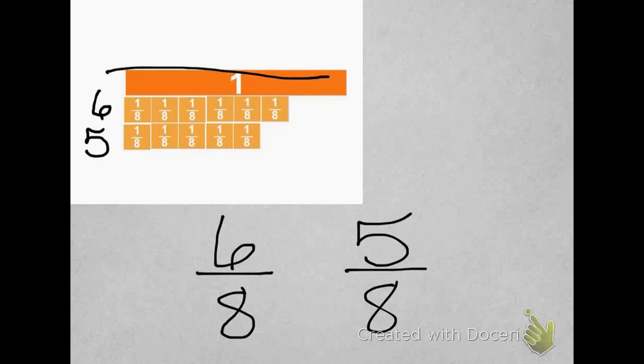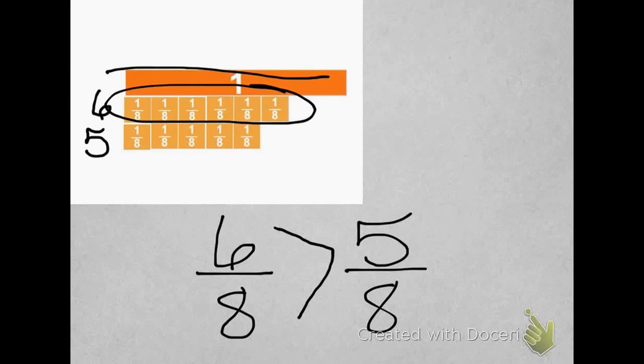So, if I look, 6 eighths is greater than 5 eighths, and I can prove it by looking at my fractions. Here I have 6 eighths. Here I have 5 eighths. Just by looking, I can tell that 6 eighths is greater.